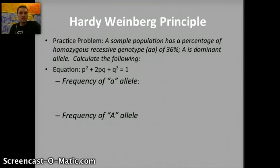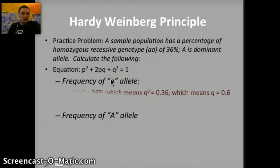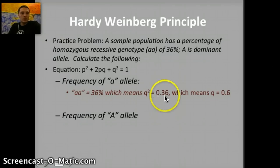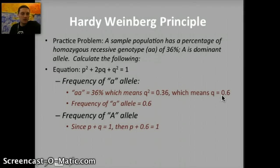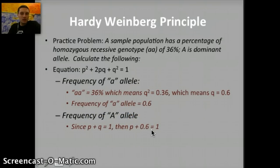Homozygous recessive — aa — is 36% of the population, as given in the problem. So Q² equals 0.36, which means Q equals the square root of 0.36, so Q equals 0.6. The frequency of the recessive allele in this population is 0.6. Since P plus Q equals 1, substituting in Q gives us P plus 0.6 equals 1, so P equals 0.4. That's the frequency of the dominant allele occurring within the population.